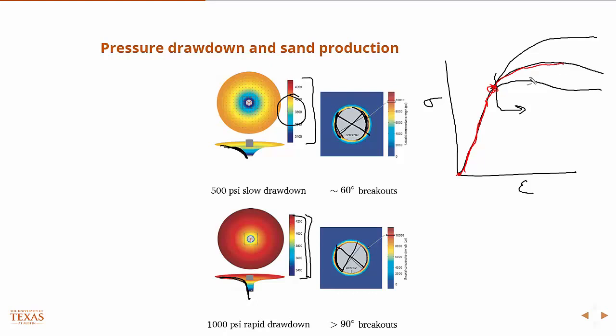The idea is that if I load up into this region, and then I unload, then there's going to be some permanent strain there. And so that permanent strain is the plastic strain. We typically have failure models that will, based on experiments and other data, tell you that there's some acceptable value of plastic strain before then you'll produce sand.